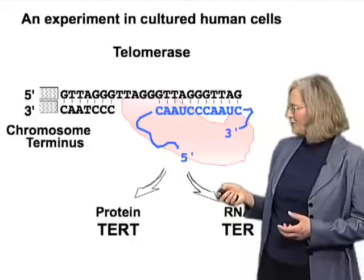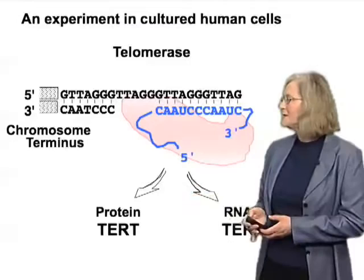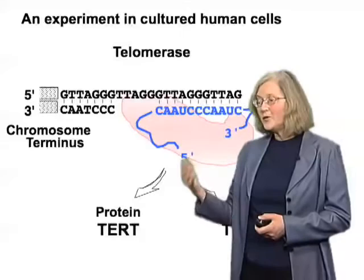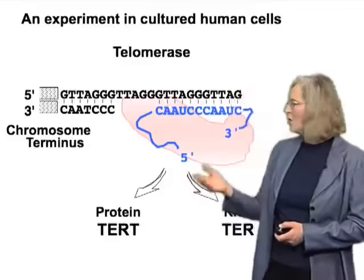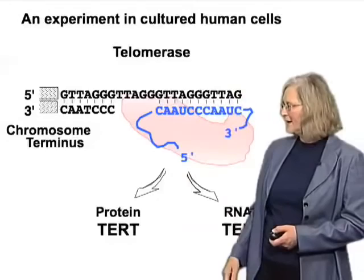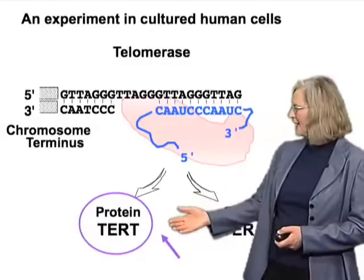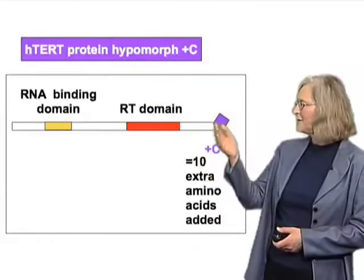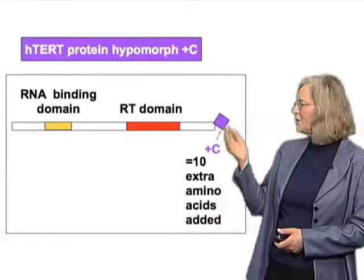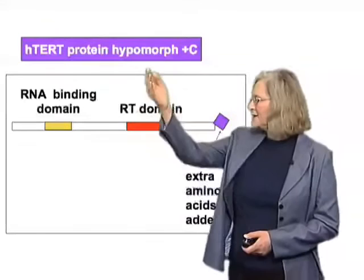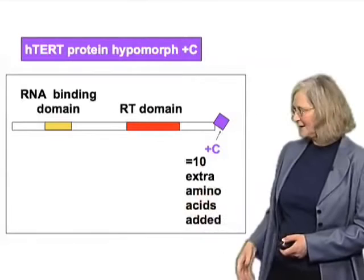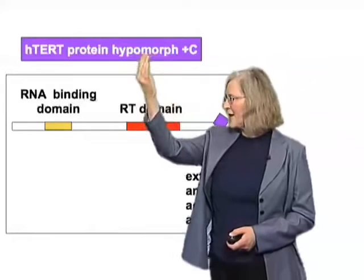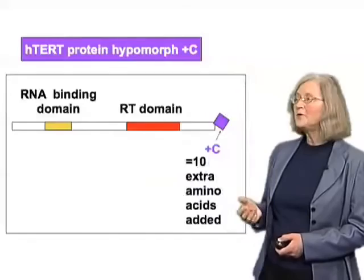What was done was to compare cells in which telomerase was being expressed or not being expressed, and look at the growth of the cells and the telomere length. The protein TERT is the core protein that has the enzymatic reverse transcriptase activity, and in these experiments a particular mutation was made on the TERT protein — a very small change of a few amino acids added to the very C-terminus. This doesn't affect the enzymatic activity, but it does affect the ability of this enzyme to elongate telomeres in cells. It's called a hypomorph because it has an insufficient function.